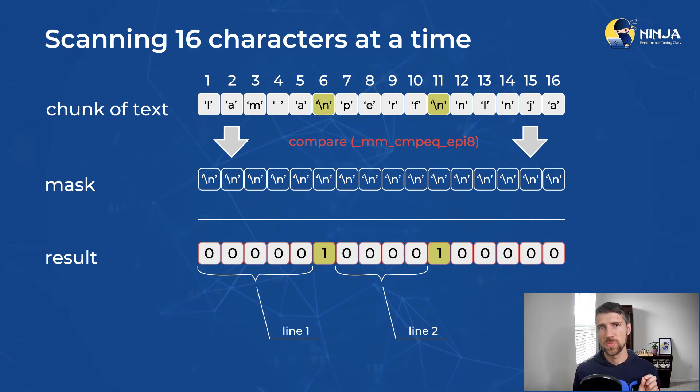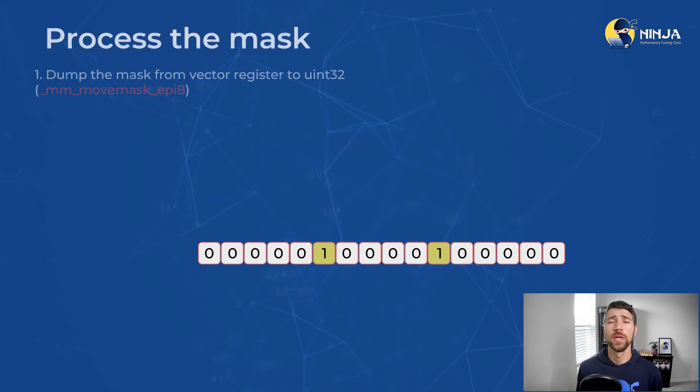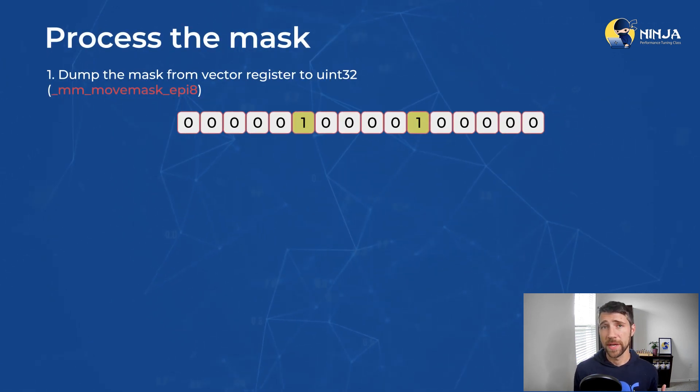However, there is one last step that needs to be explained, and it is how do you process the mask and find all the positions in this mask where we have the value one. Well, remember that we have our resulting mask in a vector register, but it would be easier for us to dump it into a single unsigned 32-bit integer value. Well, in this case, actually int 16 would be enough, but okay. And you can do this with move mask compiler intrinsic.